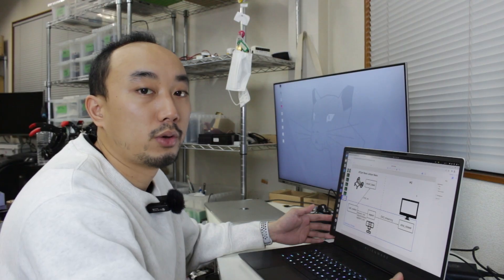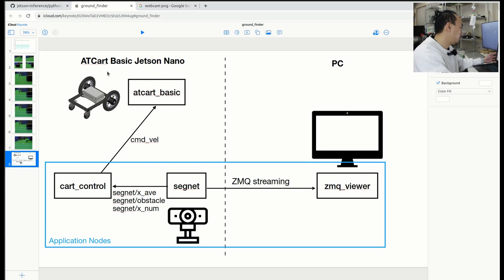About what's going to happen on the robot: on the AT Card Basic Jetson Nano we're going to run three nodes. There is the AT Card Basic node which should come with the robot itself. This one is going to subscribe to the command velocity topic and then convert it to the command to drive the motors.